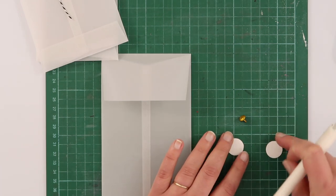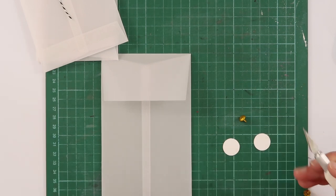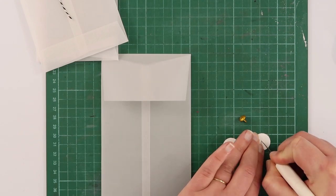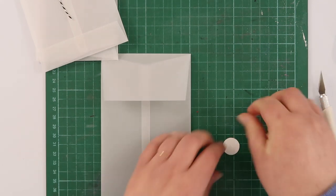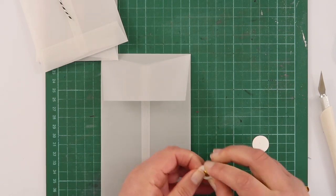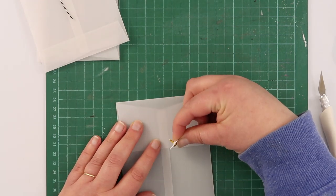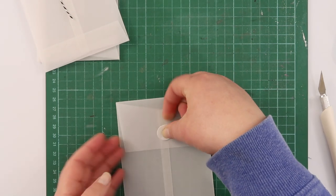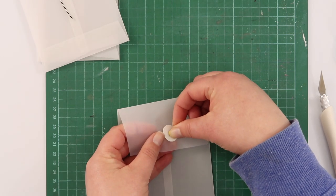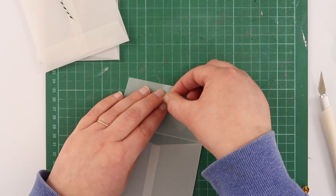I've punched out a couple of little circles—this is just some thicker card, sort of watercolor paper I think. To make things easier for myself, I'm just going to create a wee slit in the middle for my brads to go through and just poke them in. Then you want to work out where they're going to go, so they're in the middle, and just poke them through the vellum and flatten them out on the other side.